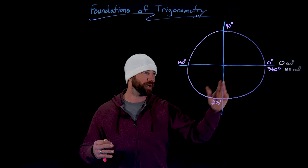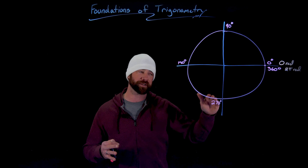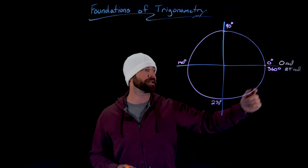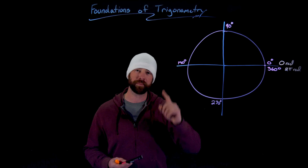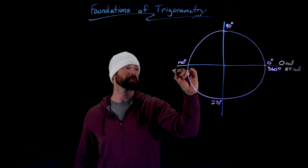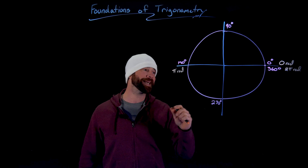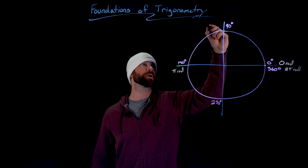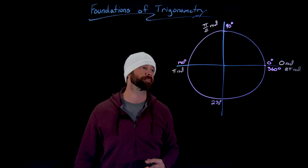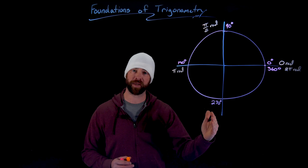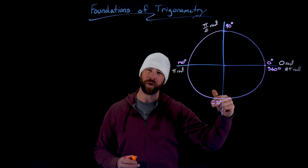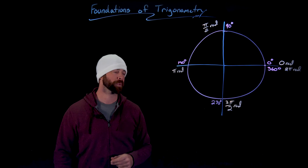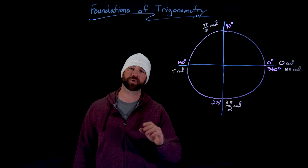We will call two pi radians one complete circle. Based on that, we can do exactly the same work we did with 90, 180, and 270 degrees. If it takes two pi radians to get all the way around, halfway around would be pi radians. The halfway point between pi radians and zero radians would be pi over two radians. And three-fourths of the way around would be three pi over two radians.